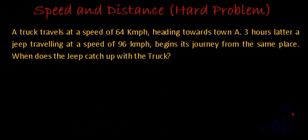Here we have one assumption that both the vehicles are travelling at constant speed. The truck is travelling at 64 km per hour constantly and the jeep is travelling at 96 km per hour constantly. The truck starts first and 3 hours later, a jeep starts at a higher speed. The speed of the truck was 64 kmph and after 3 hours, the jeep is starting at a speed of 96 km per hour. Since the speed of the jeep is more than the speed of the truck, it will definitely catch it up.